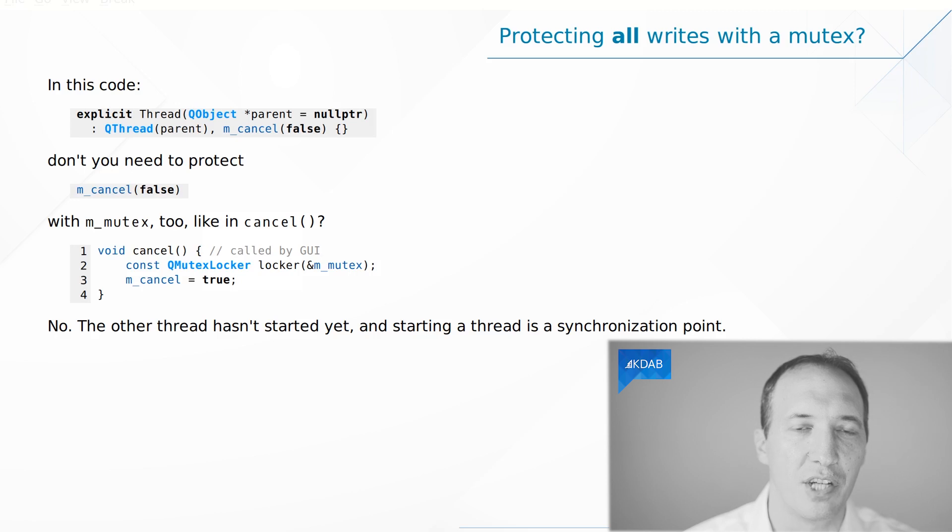And starting a thread is actually a synchronization point. It will first release all the changes, and then the secondary thread will acquire those changes. So we don't need a mutex here. And actually even if we wanted one, we would have some problems with syntax. With a boolean, we could do that in the body of the constructor. But if it was another class, there is no way to insert a mutex in the constructor initialization list anyway.